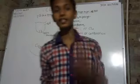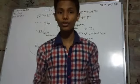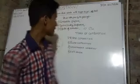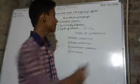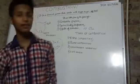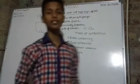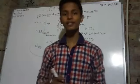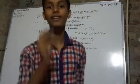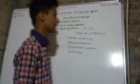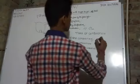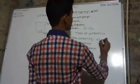Now let's look at the types of combustion — there are four types. The first type is rapid combustion, where any substance starts burning very quickly. An example is paper, which burns very quickly.